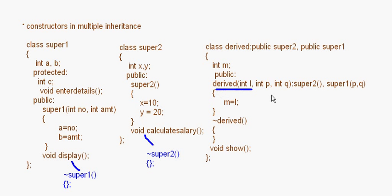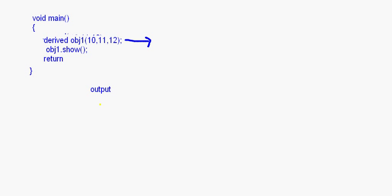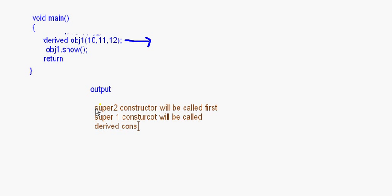When the derived class object is created, it calls the constructor of super2 first, then super1, and then the derived class constructor — because that is the inheritance order specified. So super2 gets constructed first, then super1, then the derived class. This is the order of constructor invocation: super2 constructor is called first, then super1 constructor, then the derived constructor.